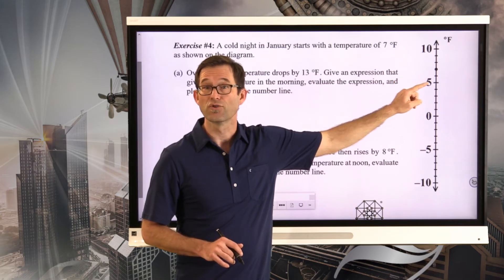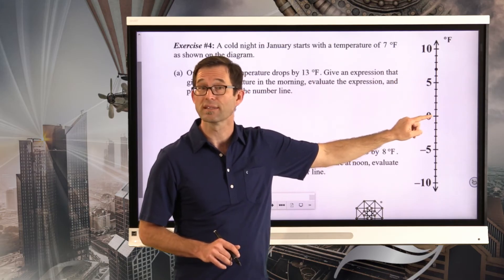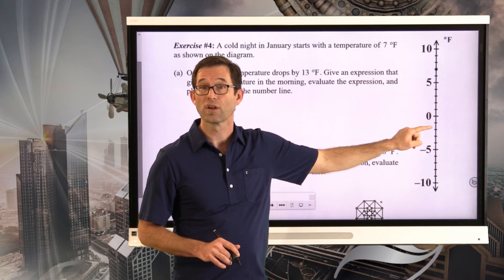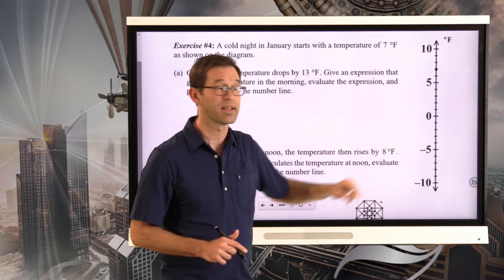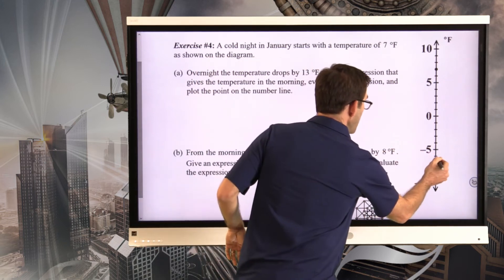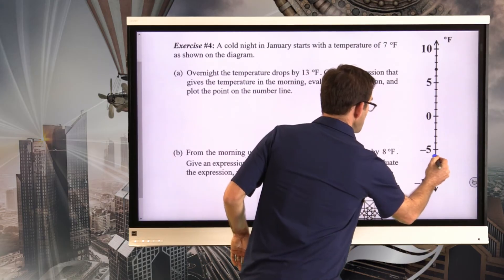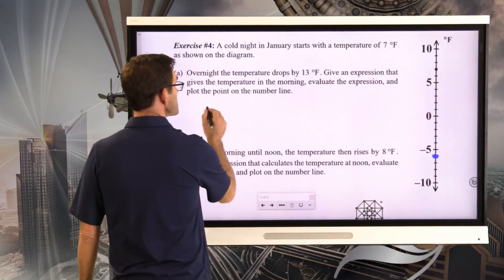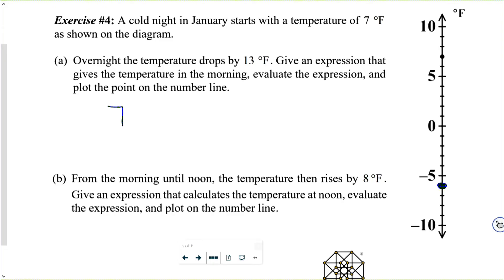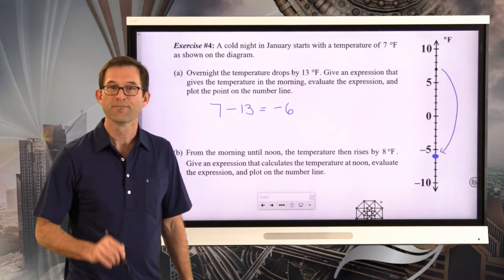Starting at positive 7, the temperature drops by 13. It drops 7 degrees down to zero, then drops another 6 degrees down to negative 6. Specifically, that corresponds to 7 degrees minus 13 degrees equals negative 6 degrees. We've literally moved that down 13 units.